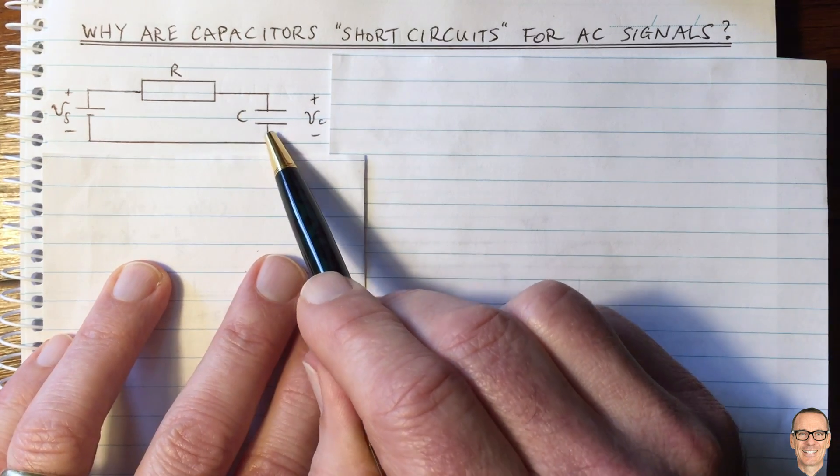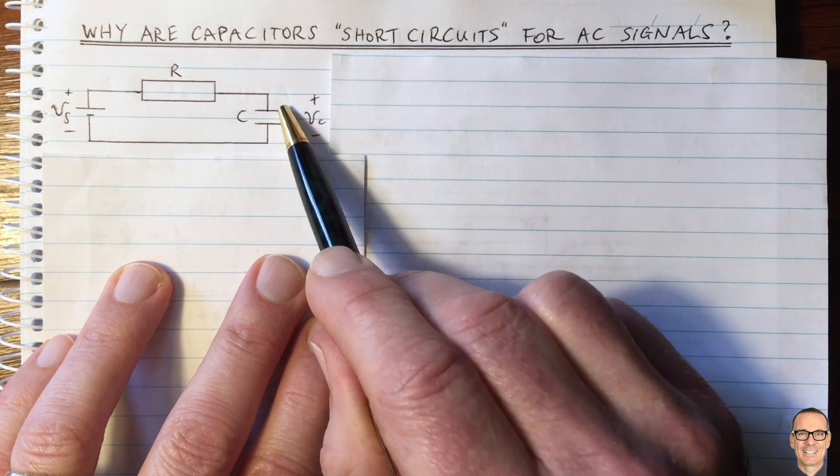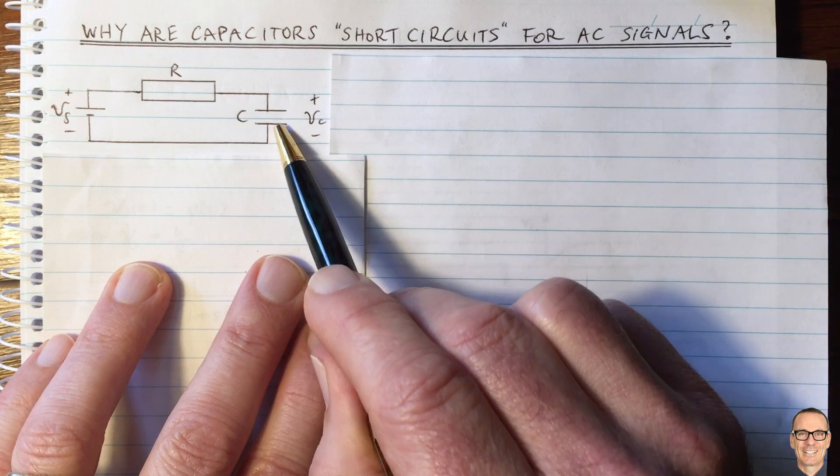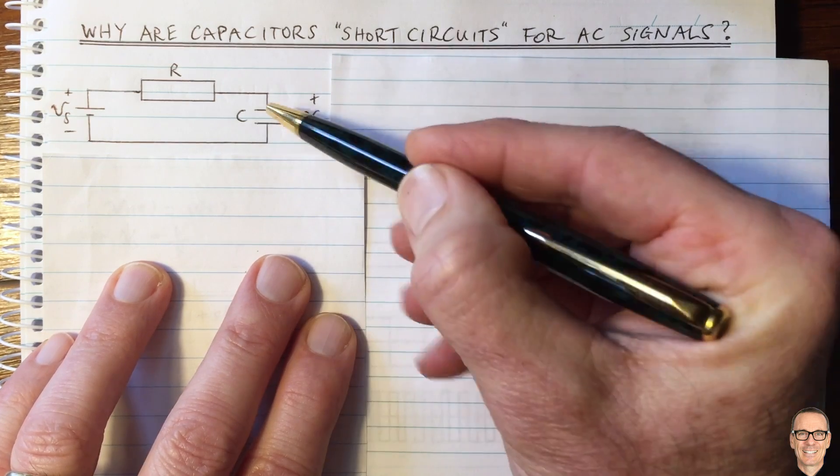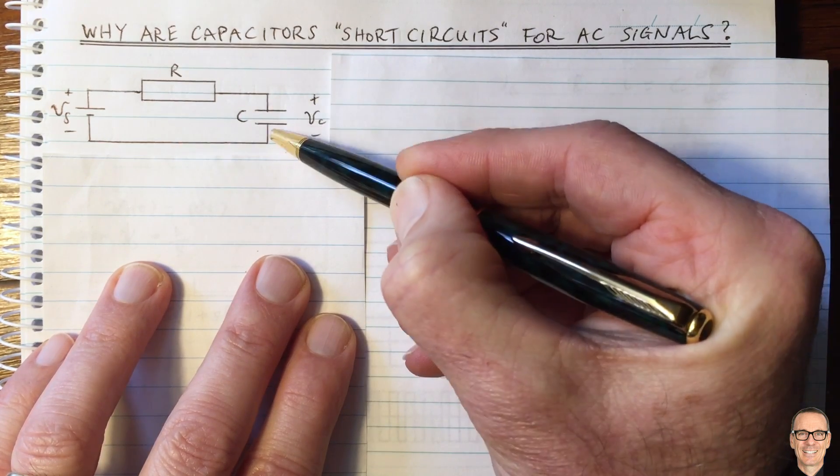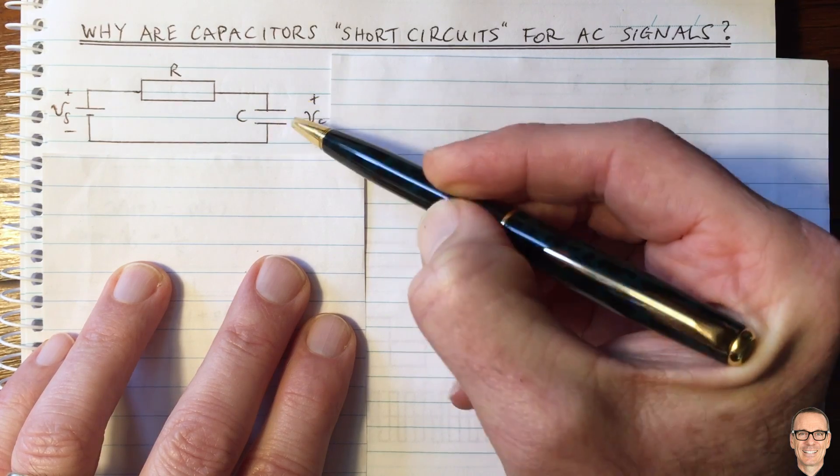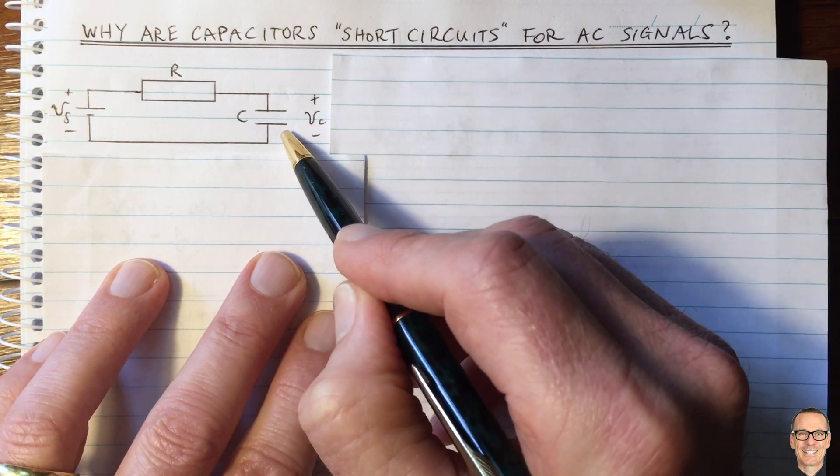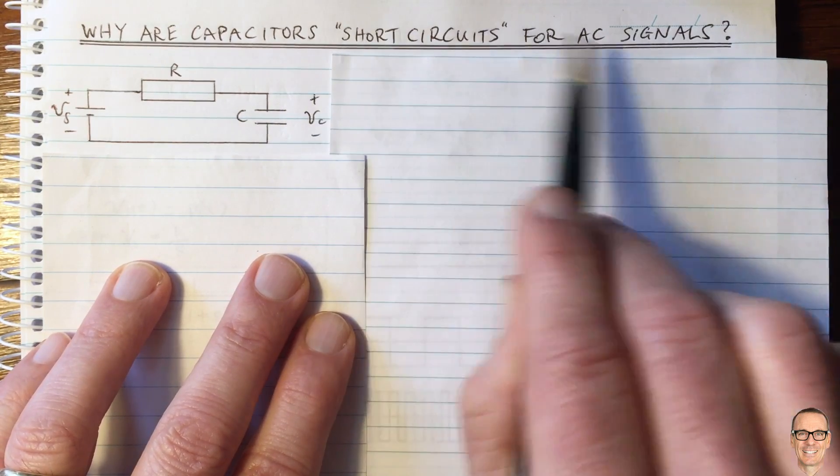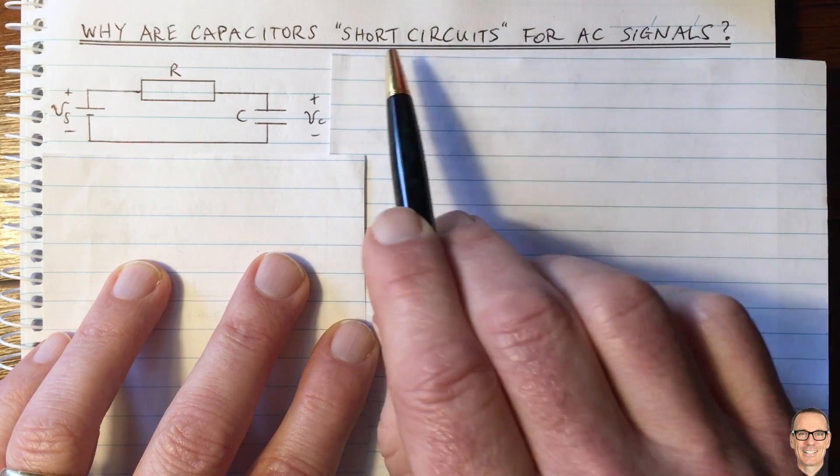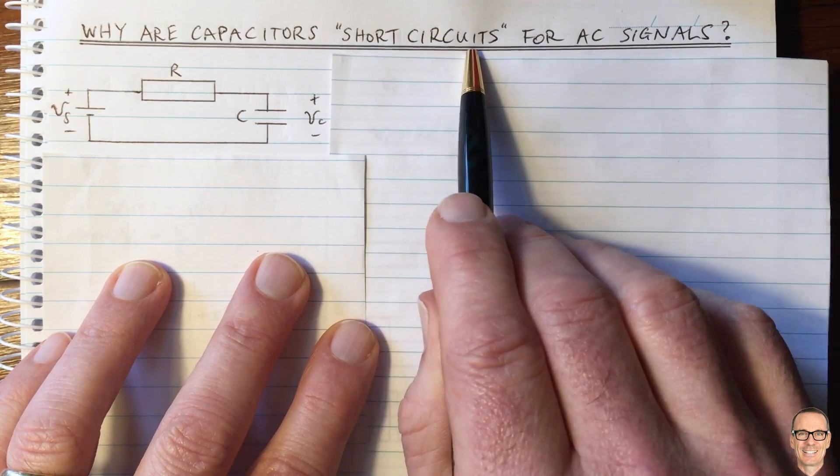We've got a source and a resistor and a capacitor. And the capacitor is made from metal plates which have no conduction between the plates. There's no chance for an electron to travel from one plate to another through the capacitor. It is definitely an open circuit. So why is it that for AC signals we can consider it to be a short circuit?